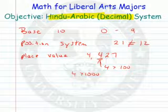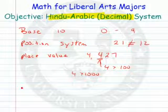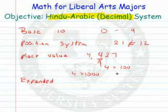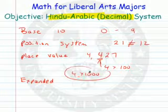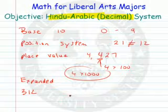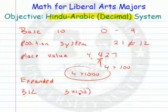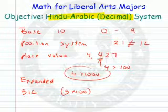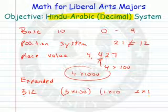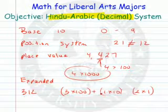Its position in the system is very important. We have now in the decimal system what we call, and we use a lot, expanded form. The expanded form of a number uses the idea we just talked about. If I was to write 312 in expanded form, it is 3 in the 100s place, so we have 3 100s. We have 1 in the 10s, and we have 2 in the 1s.